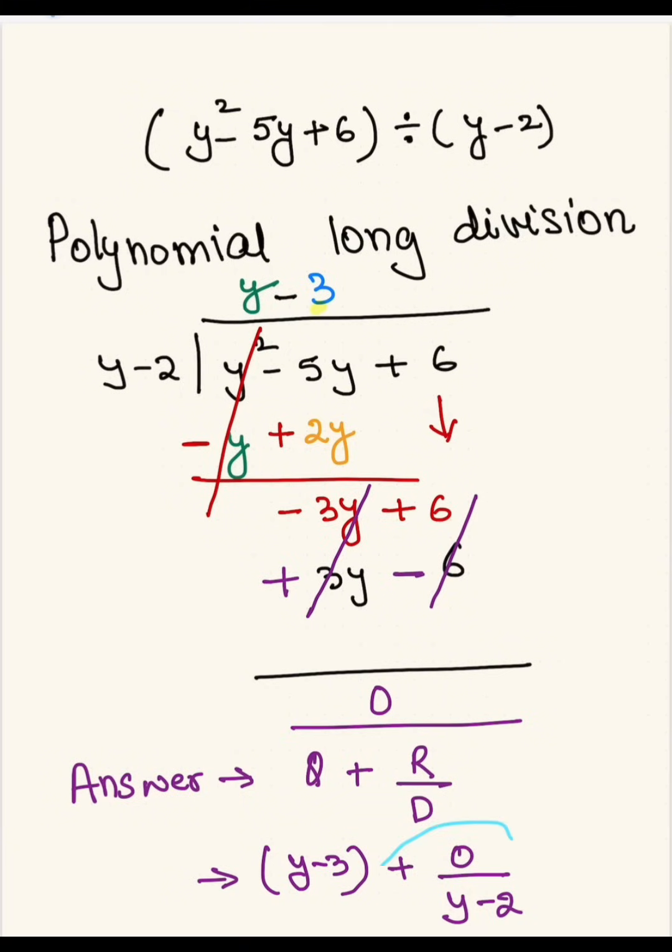Now remember, if the remainder is 0, you really don't have to write this down. If it was a different number, then you have to write it down. But 0, there is really no need. So there's no need to put it here. And I can just write y minus 3, box it up, and done.